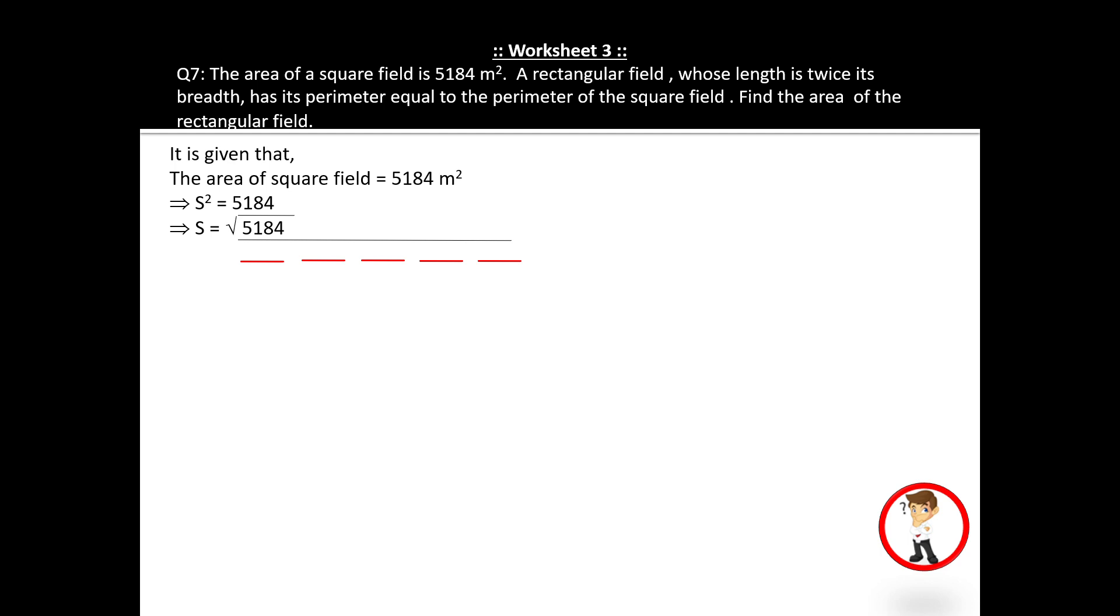Now, it is given that the area of a square field is 5184 square meters. It means side squared equals 5184. As I told you in the previous question, if square is there, to remove this square, take the square root of the other side. So side equals the square root of 5184.